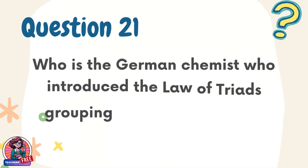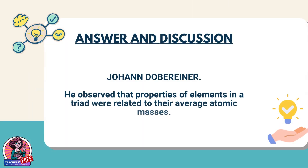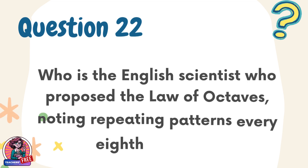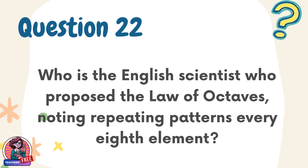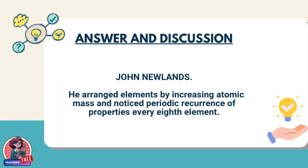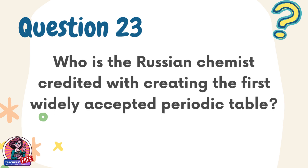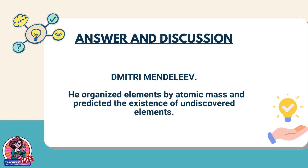Question 21. Who is the German chemist who introduced the law of triads grouping elements in threes? Answer: Johann Döbereiner. He observed that properties of elements in a triad were related to their average atomic masses. Question 22. Who is the English scientist who proposed the law of octaves, noting repeating patterns every eighth element? Answer: John Newlands. He arranged elements by increasing atomic mass and noticed periodic recurrence of properties every eighth element. Question 23. Who is the Russian chemist credited with creating the first widely accepted periodic table? Answer: Dmitry Mendeleev. He organized elements by atomic mass and predicted the existence of undiscovered elements.